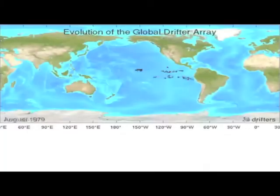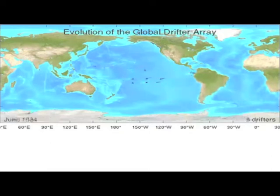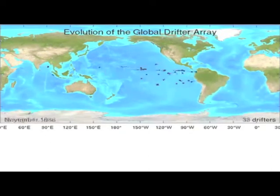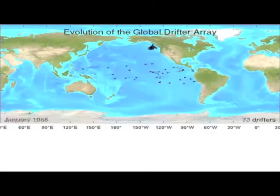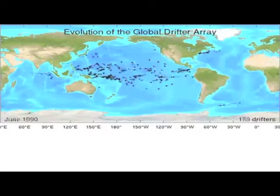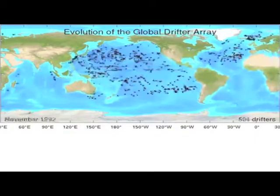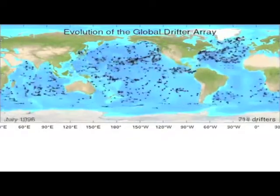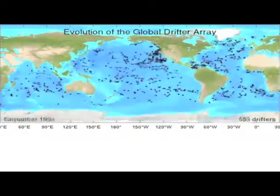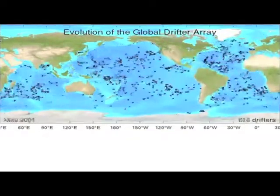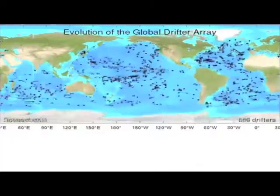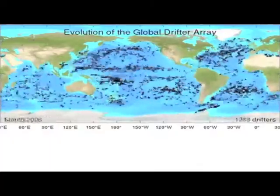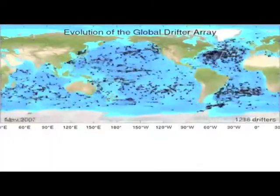The Global Drifter Program began in 1979 with satellite-tracked surface-drifting buoy observations in the tropical Pacific, intended to understand the El Niño phenomenon. Through the 1980s, the instrument continued to evolve and was deployed in the Atlantic and Indian Oceans, and then in the Southern Ocean, until eventually we had a worldwide array of over 1,000 drifting buoys measuring ocean currents and surface temperatures.